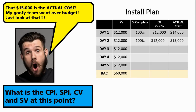Let's apply some earned value basics to these metrics. What is the cost performance index, schedule performance index, cost variance, and schedule variance at this point? You know what the planned value is — $12,000. You know what the earned value is — $12,000. And the actual cost is $15,000. CPI is earned value divided by actual cost. SPI is earned value divided by planned value. Cost variance is earned value minus actual cost. Schedule variance is earned value minus planned value. Do the math.